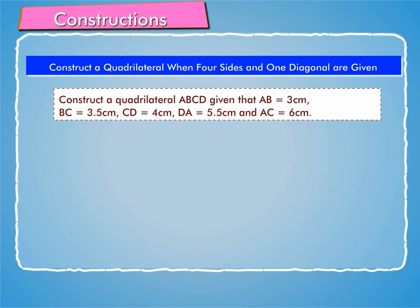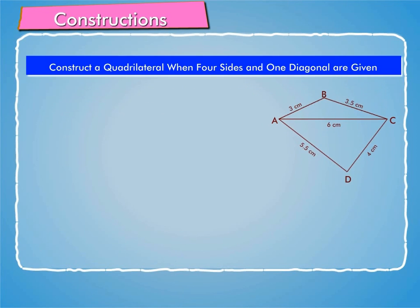Given that AB is equal to 3 cm, BC is equal to 3.5 cm, CD is equal to 4 cm, DA is equal to 5.5 cm, and AC is equal to 6 cm. To construct this, we follow these steps.